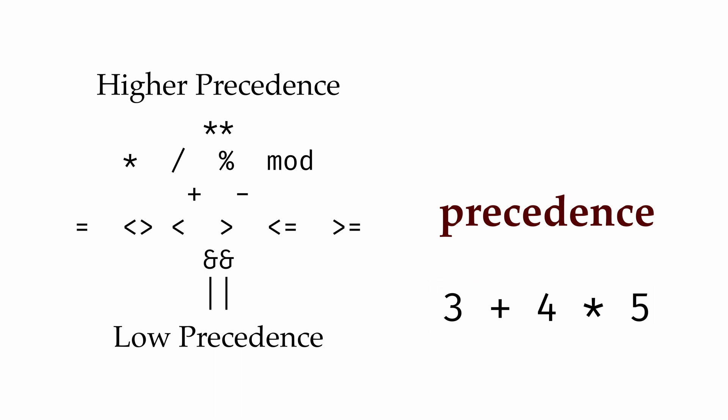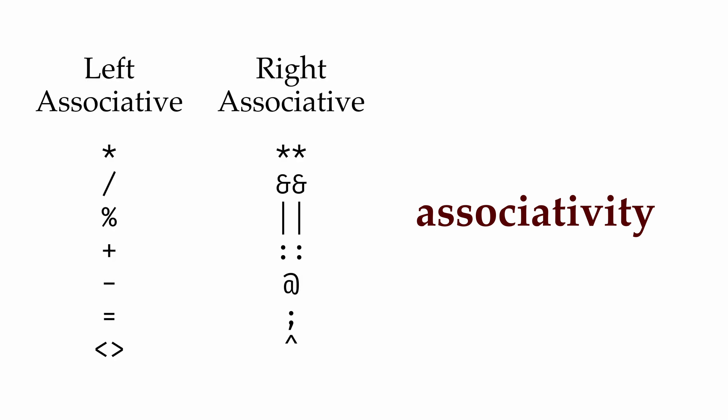Programming languages also deal with ambiguity with associativity. In OCaml, for example, the subtraction operator is left associative. So in the expression 5 minus 3 minus 1, we would group the 5 minus 3 together as a sub-expression, rather than 3 minus 1.